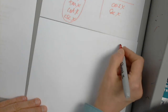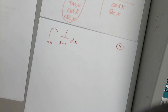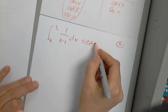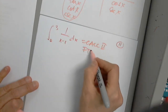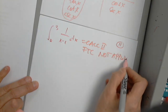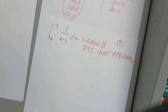Next: the integral from 0 to 3 of 1/(x−1) dx. The answer is: improper integral — or equivalently, Fundamental Theorem of Calculus Part 2 is not applicable.